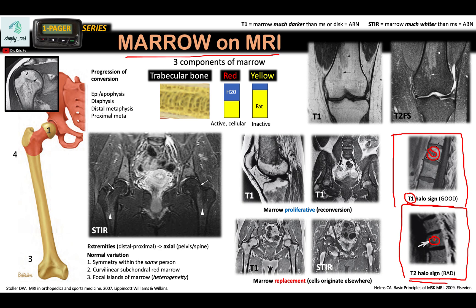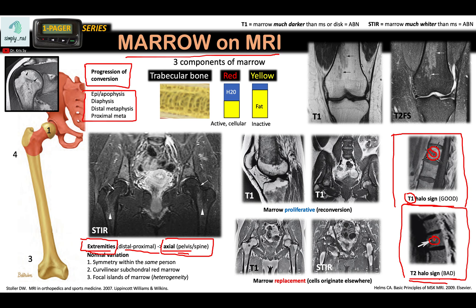Next, let us talk about the progression of conversion. Within one person, you have a conversion within one bone — within a tubular bone — and you also have a pattern of progression from the extremities to the axial skeleton. To remember this progression, think about an adult patient who needs to undergo bone marrow biopsy. You want to get rich and cellular bone marrow from the axial skeleton, specifically the pelvis, not the extremities. So the progression of conversion from red to yellow marrow is first in the extremities and last in the axial skeleton.